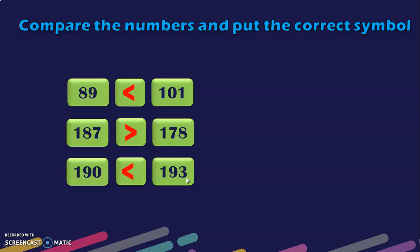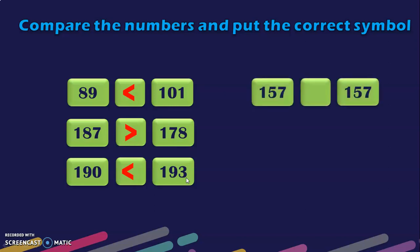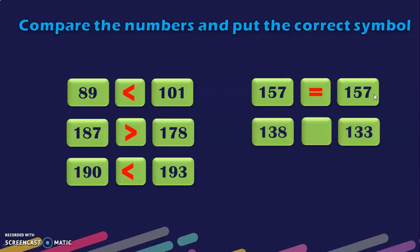Hope you are clear with the rules and able to understand how we are going about with this exercise. Now we have 157 and 157. Both digits and values are the same, so we put an equal to symbol. Next: 138 and 133. We look at the 1s place because the 100s and 10s places are the same. Since 8 is greater than 3, 138 is greater than 133.